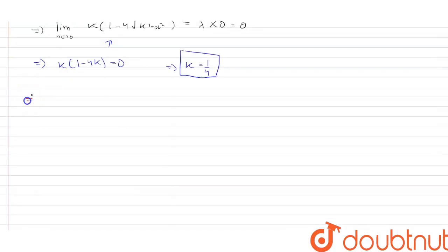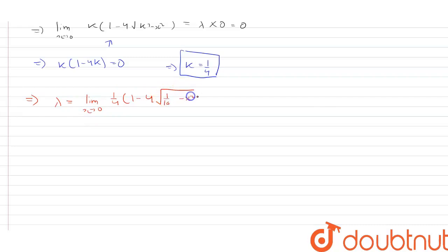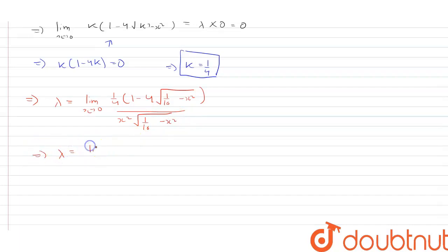This is the value of k. Now for finding the value of lambda, putting the value of k in the limit, we have lambda is equal to limit x tends towards 0, k that is 1 by 4 into 1 minus 4 root of k squared that is 1 by 16 minus x squared, whole divided by x squared into root of k squared that is 1 by 16 minus x squared. This implies lambda is equal to limit x tends towards 0, 1 minus root of 1 minus 16x squared, divided by x squared into root of 1 minus 16x squared.